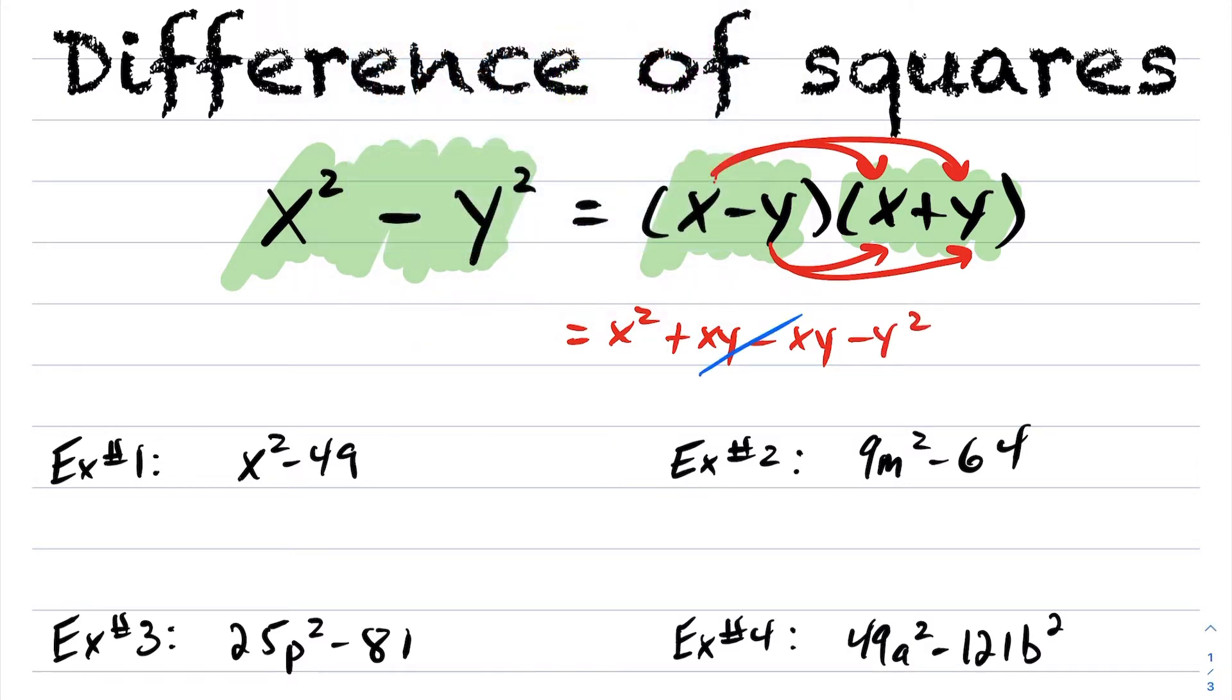You'll notice these cancel, and we're left with, you guessed it, x² - y². So these are equivalent terms, and by doing this, we can now have this expression factored.